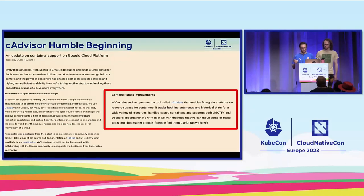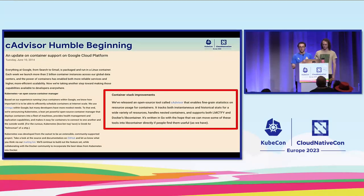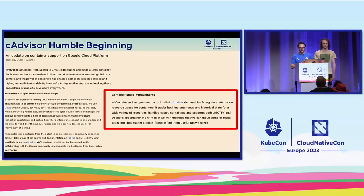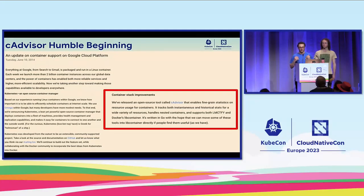So where do these metrics come from? To explain that, I need to introduce CAdvisor, which had a very humble beginning. This is a blog post from 2014 — the first time Kubernetes was announced on the Google Cloud Platform blog. Side by side on the same day Kubernetes was announced, CAdvisor was also announced. CAdvisor's job, as described in the blog post, is a tool that enables fine-grained statistics and resource usage for containers. At that time, containers were just taking off — people were used to VMs — and Google had a lot of experience running containers in production. When Google announced Kubernetes, it also realized monitoring and observing your workloads would be critical. That's where CAdvisor came in.